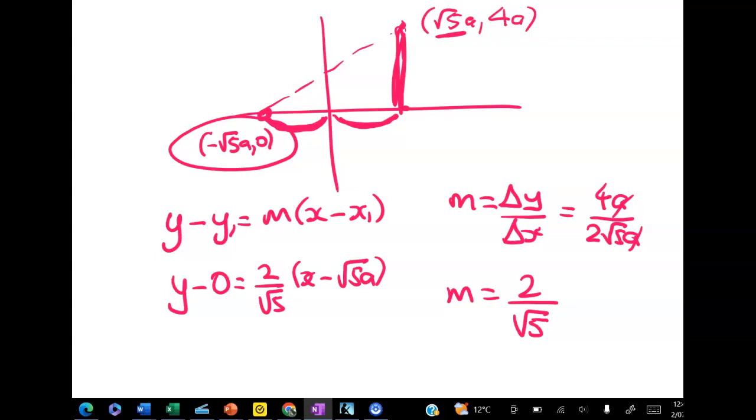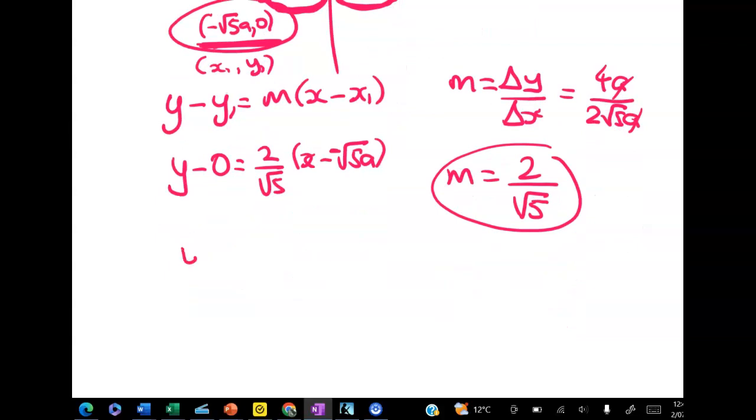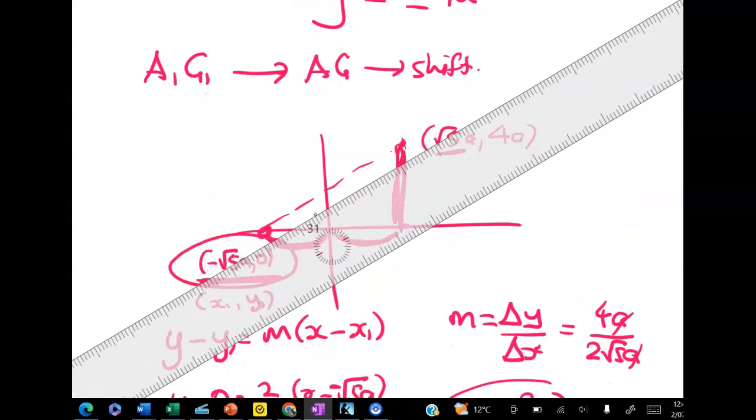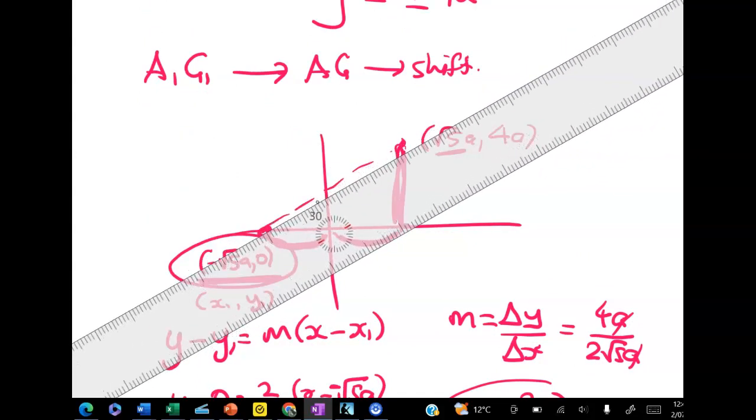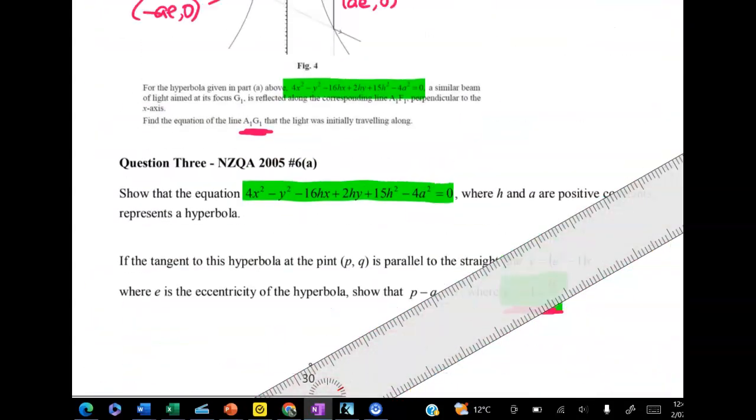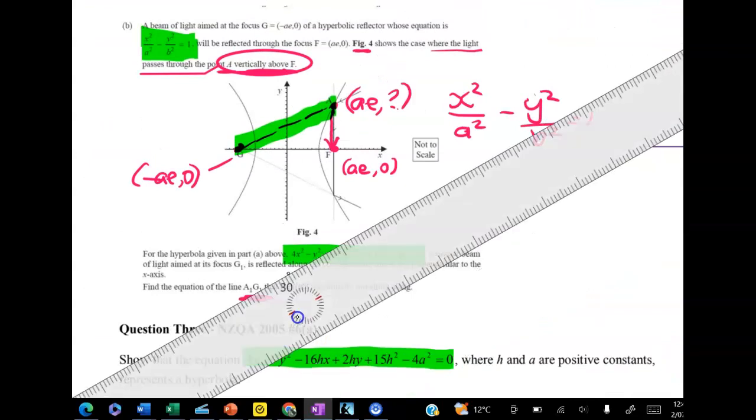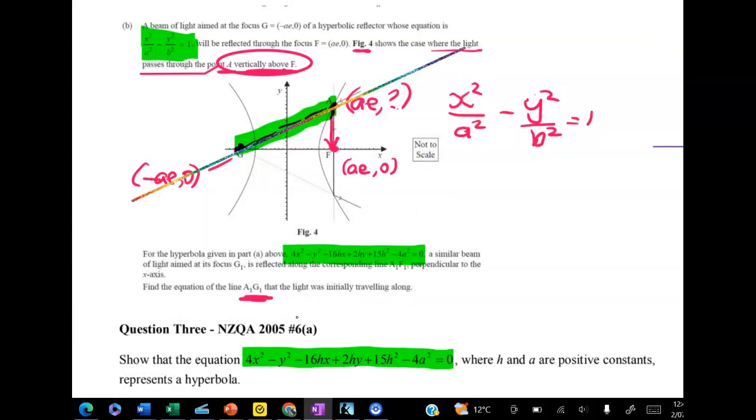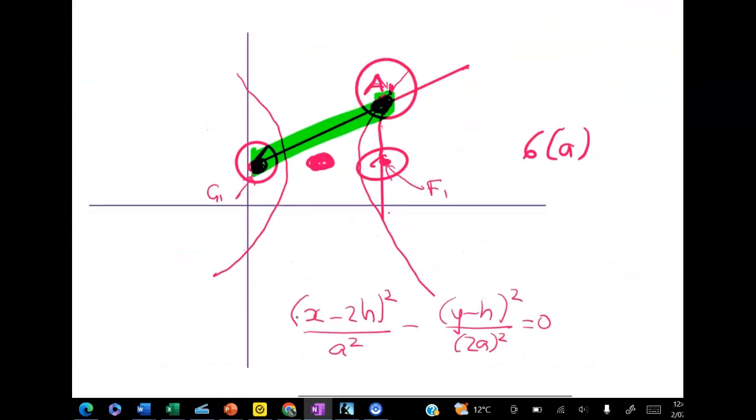That should be negative. This is my point so this is x1, y1 and this is my gradient. Now cleaning that up gives me y is equal to 2 on root 5x plus 2a. So that's not quite my final answer but I'm just about there. The line going through ag is this one here. We've done that.